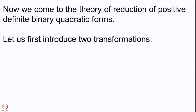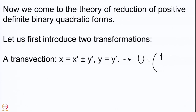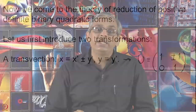We are going to obtain the theory of reduction, starting from a positive definite form and applying suitable transformations to get a simpler form. We introduce two transformations. The first is called a transvection, which in matrix notation corresponds to U = [[1, ±1], [0, 1]]. This gives x = x' ± y' and y = y'. These matrices are called transvections.